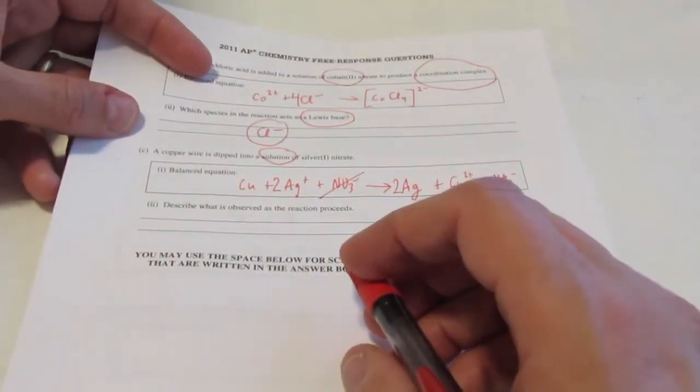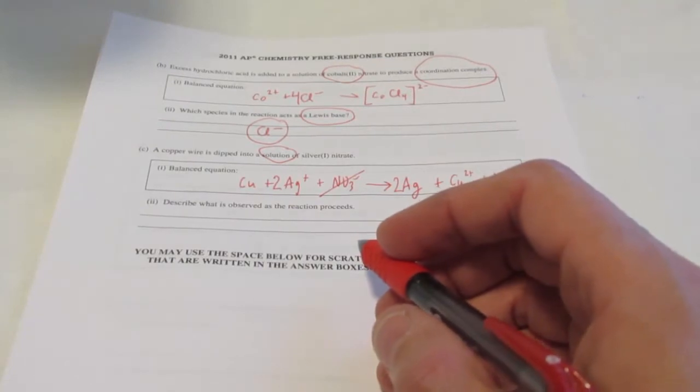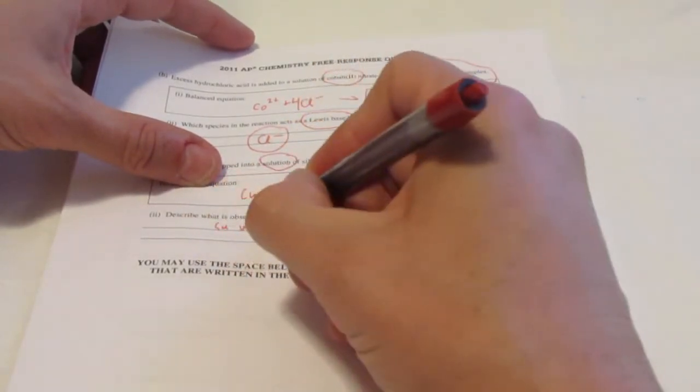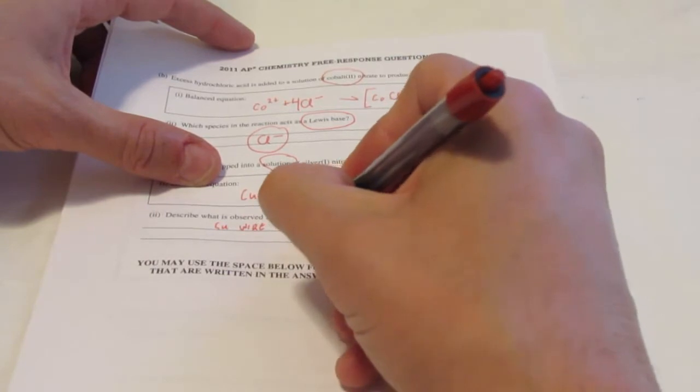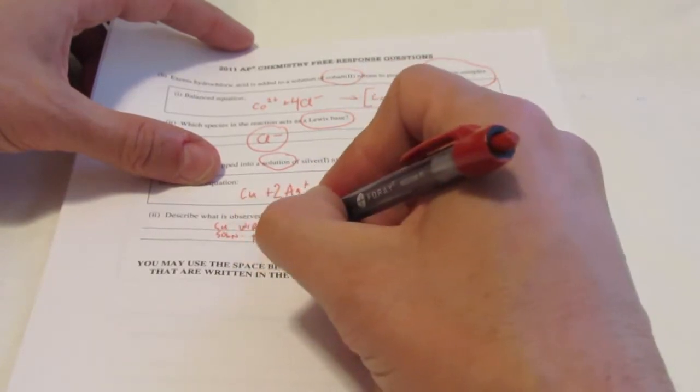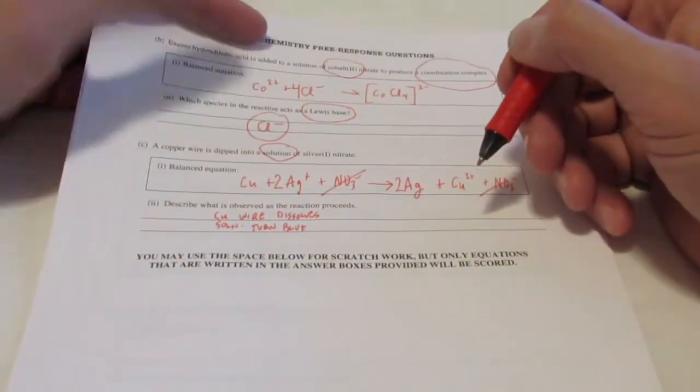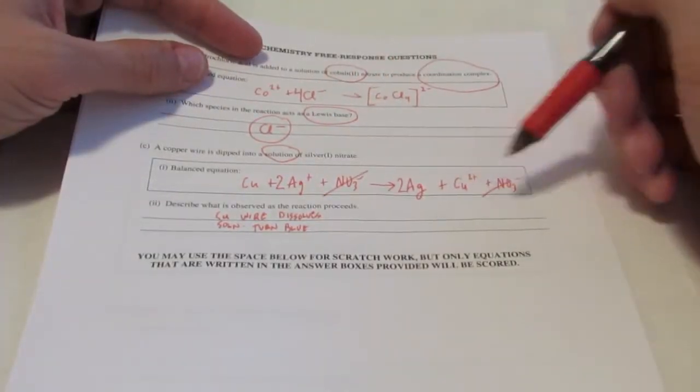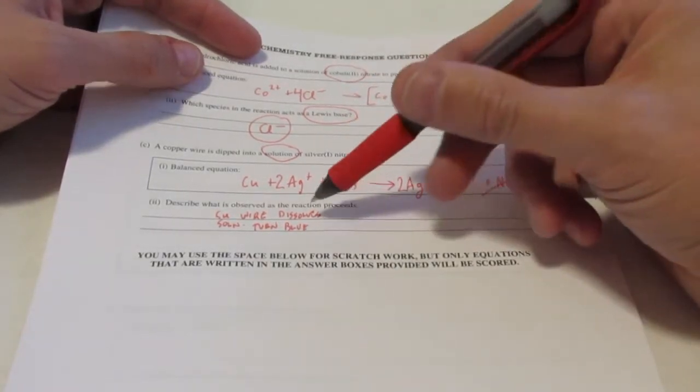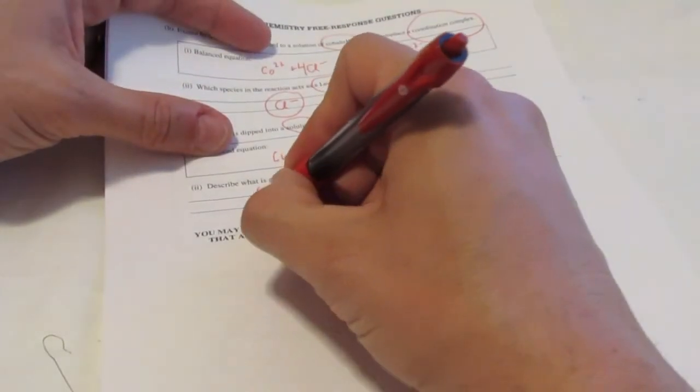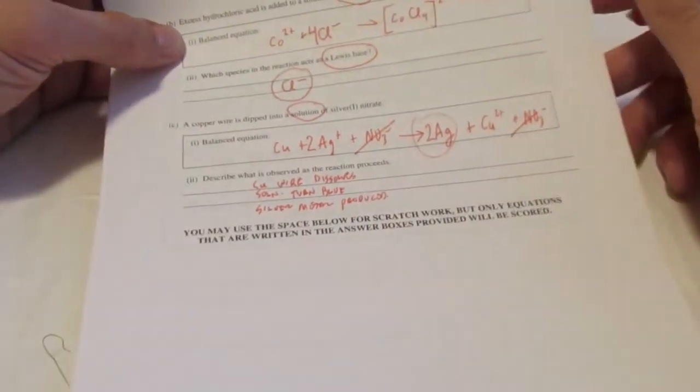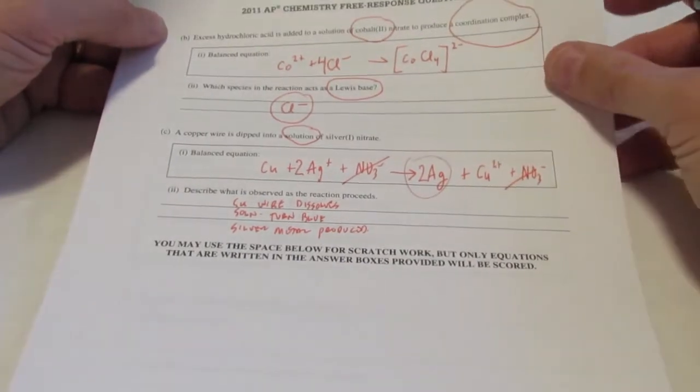Describe what is observed as the reaction proceeds. Well, we're probably going to see a couple of things here. I would imagine that the copper wire would dissolve as it reacts. I would also imagine the solution would turn blue. Do you folks know why? Transition metal ions with partially filled D sub-levels are usually colored, and copper two plus is a colored ion. So the copper wire will get smaller. The solution will turn blue. How about this? Silver metal is produced. Now, you only need to have one of those. I got carried away and wrote all three for you, but one of those would be fine on the test.